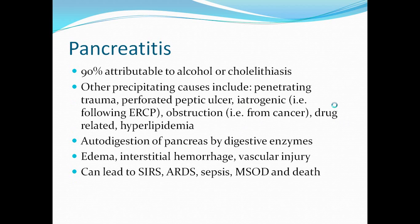We'll do a brief review of pancreatitis, already covered in Dr. Grover's lecture. 90% are attributable to alcohol or choledocholithiasis. Other precipitating causes include penetrating trauma, perforated peptic ulcer, iatrogenic causes including ERCP, obstruction from cancer, and drug-related causes or hyperlipidemia. It results from autodigestion of the pancreas by digestive enzymes, leading to local edema, interstitial hemorrhage, and vascular injury, ultimately leading to systemic inflammatory response syndrome, ARDS, sepsis, multi-system organ dysfunction, and death.